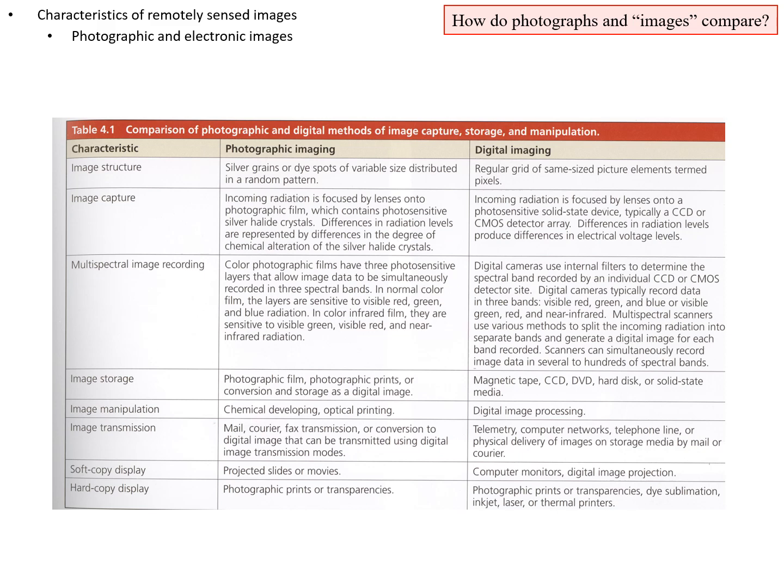For image storage, photographic film or prints have to be stored in warehouses. There are archives of photos consisting of tens of thousands of cans of film, or you can scan them. Digital images can be stored on anything you can store any other kind of file on — hard drive, tape drive, etc.